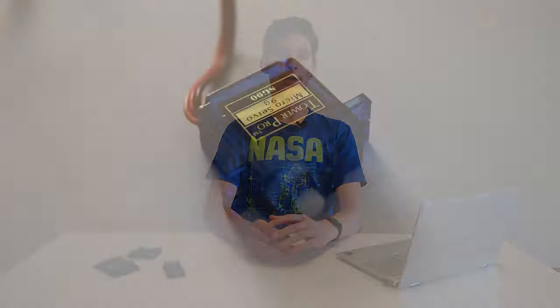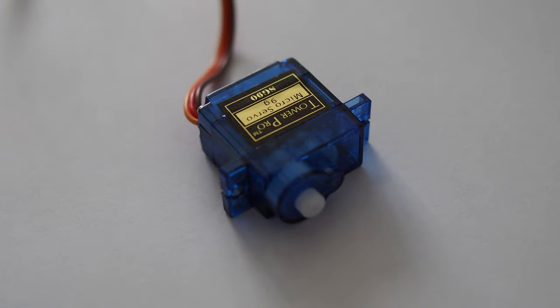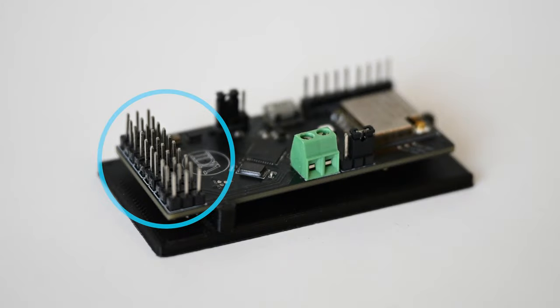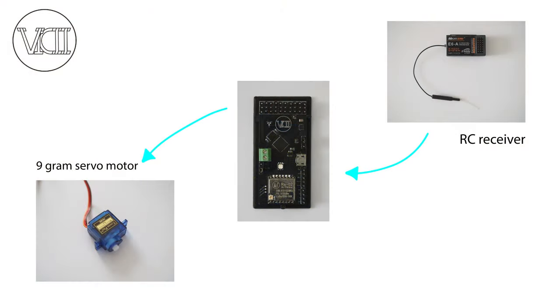The PID outputs are transferred to small 9-gram servos through 10 ports on the top of the computer — one port for each servo. If we also want to control the airplane using a radio transmitter, it's possible to connect an RC receiver to the computer as well.